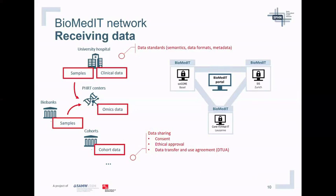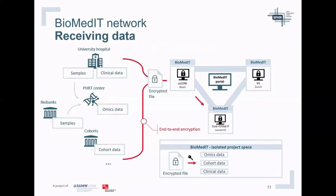For data sharing, we need patient consent, ethics approval, and a data transfer and use agreement before starting the data transfer. Once all of this is in place, data is transferred in a standardized way, encrypted end-to-end from the data providers to their closest BiomedIT node. If the processing node is Core IT in Lausanne and the isolated project space is there, a node like SciCore transfers the data to the Lausanne node. Similarly, a hospital in Zurich would transfer data through the SIS node in Zurich, which then transfers it to Core IT where the isolated project space is located.